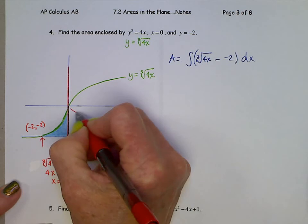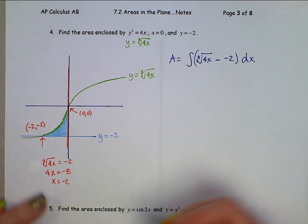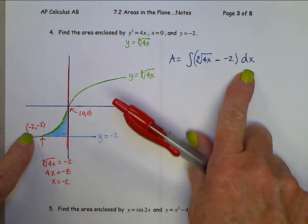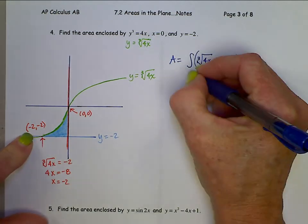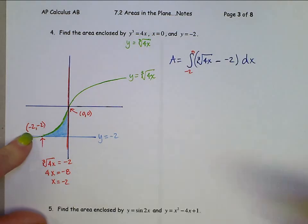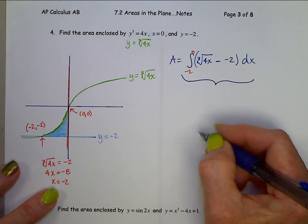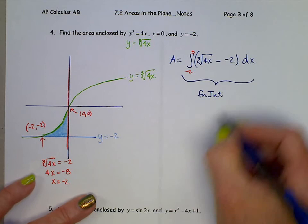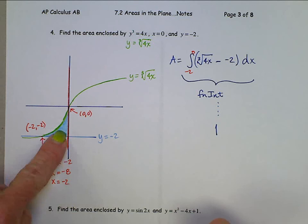That point of intersection, 0, 0. So our bounds, x values here, negative 2 to 0. You can go ahead and evaluate this on your calculator with f n i t. And you should come up with 1. That area is 1.